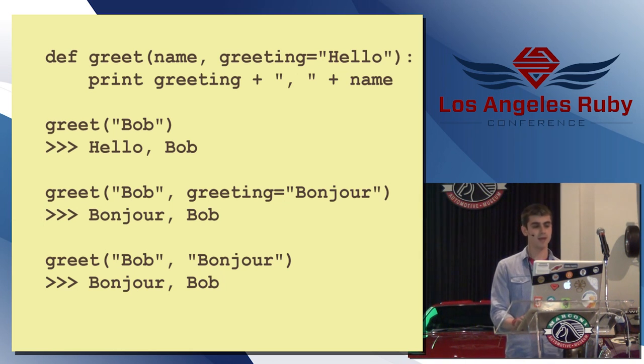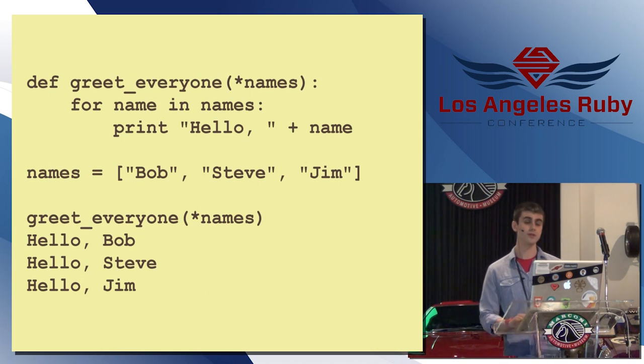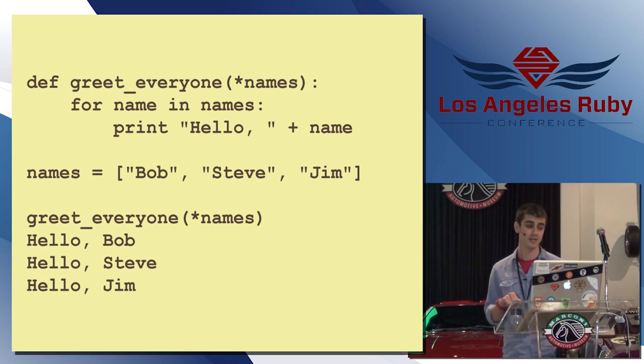It also supports argument unpacking. So, here is a function greet everyone that takes a variable list of names. And for every name in that list, it will say hello to that person. So, just like Ruby, I can create a list of names and I can call greet everyone and pass in the list as a variable length parameter list. So, again, this will just say hello to each person in the list.